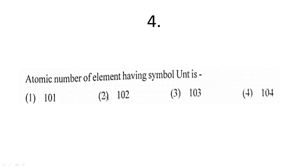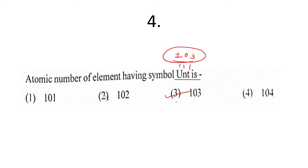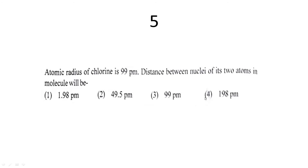The fourth question: what is the atomic number of the element having symbol Uut? Uut stands for Unniltritium — 'un' means 1, 'nil' means 0, 'tritium' means 3. This naming convention will be studied in the plus course on Unacademy. The third option is the correct answer.